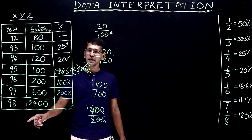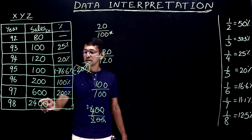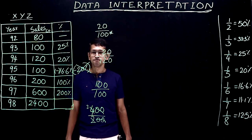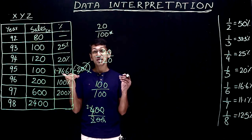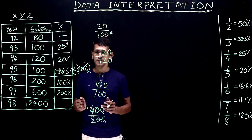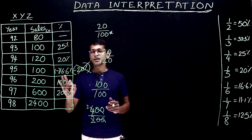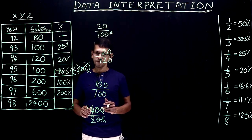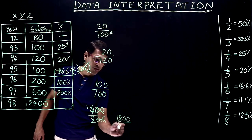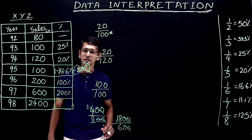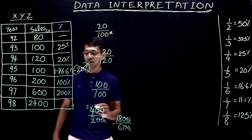From 97 to 98, 600 crores became 2,400 crores — that's 4 times. The actual increase is 1,800. Divided by the base year of 600: 1,800 by 600 simplifies to 18 by 6, which is 3. Multiplied by 100 gives 300 percentage increase.